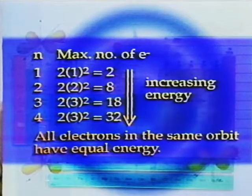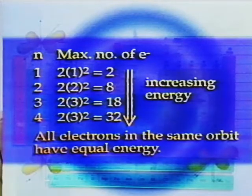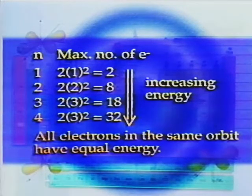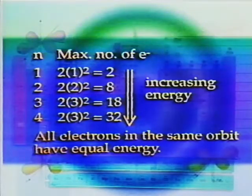The electrons in the next higher energy orbit, n equals 2, have higher energy. In the Bohr theory, all 8 electrons in this orbit have the same amount of energy.